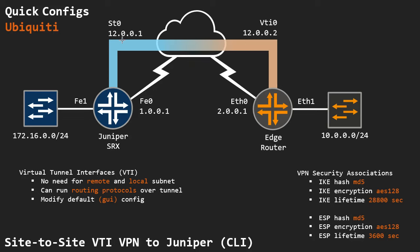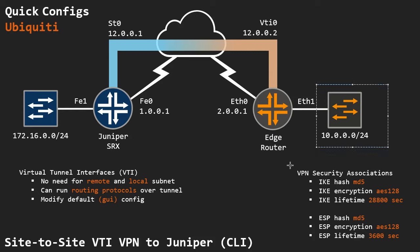The address for the tunnel interfaces are both in the 120.0.0/30 subnet range. The tunnel interfaces on the Juniper are called ST and the tunnel interfaces on an EdgeRouter are called VTI, and I'm using number 0 for both. I have an internal network range on the EdgeRouter side in the 10 range and a 172.16 range on the Juniper side. These will be the sources and destinations that will establish traffic going over these tunnels.